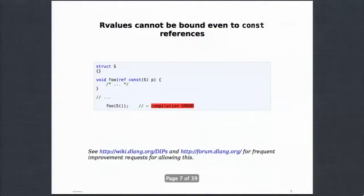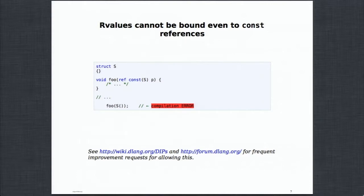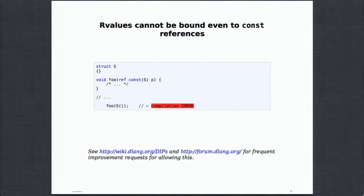There's another slide to underline this point: this is not possible today. In May 2013, D does not have const references binding to R values. But in DIPs and on the forums, there are frequent requests for this improvement. People want D to have const references where R values can be bound, because they miss this from other languages like C++. There are good reasons for it, but today it's not there.